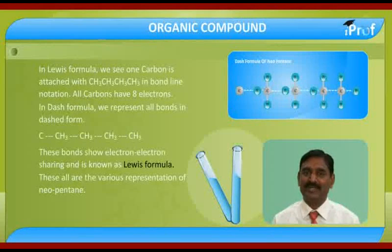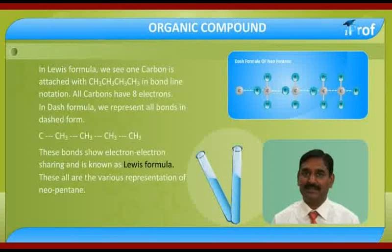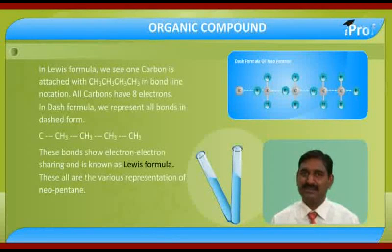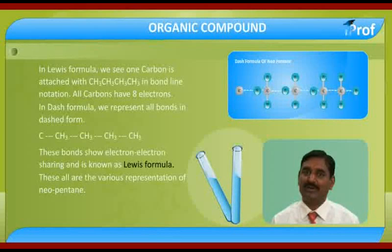In Lewis formula, we see all carbons having eight electrons. In the center carbon, we see each carbon-carbon bond involves one bond electron sharing. All valencies of the mid-carbon are explained by the surrounding carbons. In the outer carbons, all valencies are represented by one bond with carbon and three hydrogens, satisfying all full valencies.